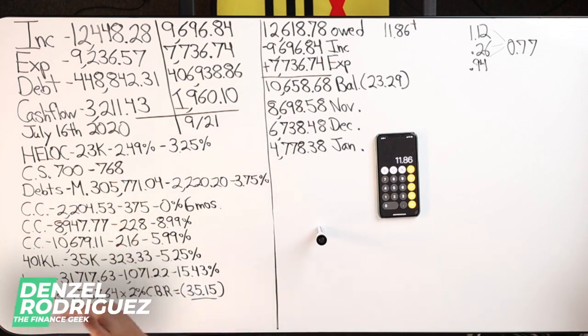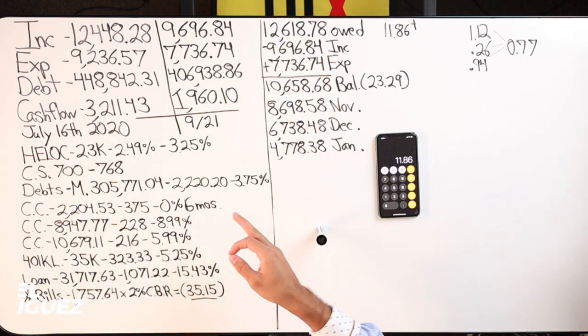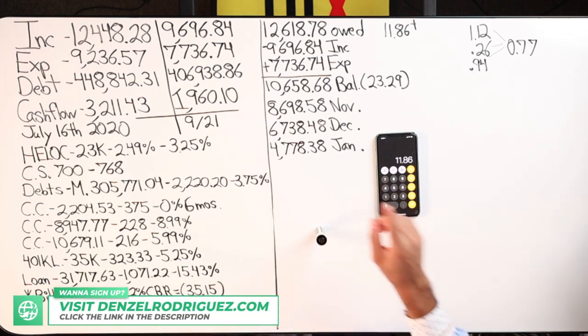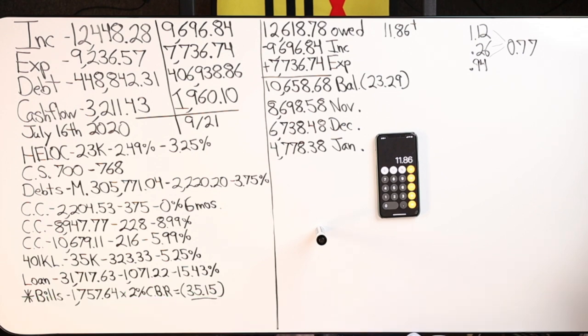Whether you do snowball, avalanche, or velocity banking, the question is which one is more efficient. Efficient doesn't always necessarily mean that I'm going to pay it off faster, but in my eyes efficiency means fastest.